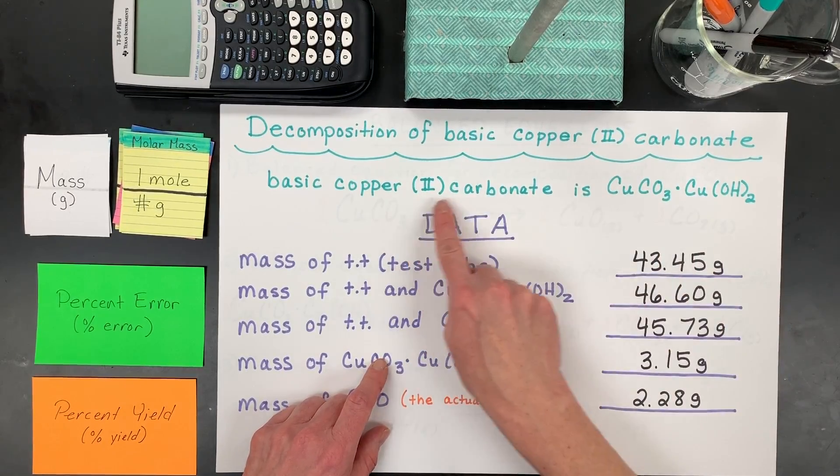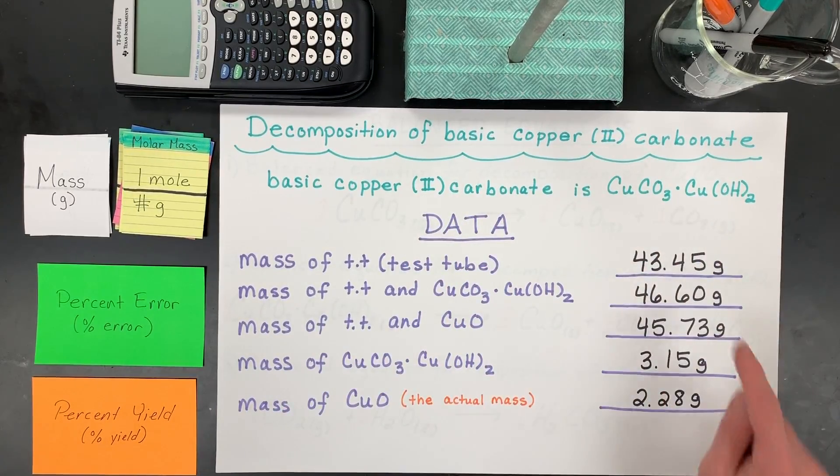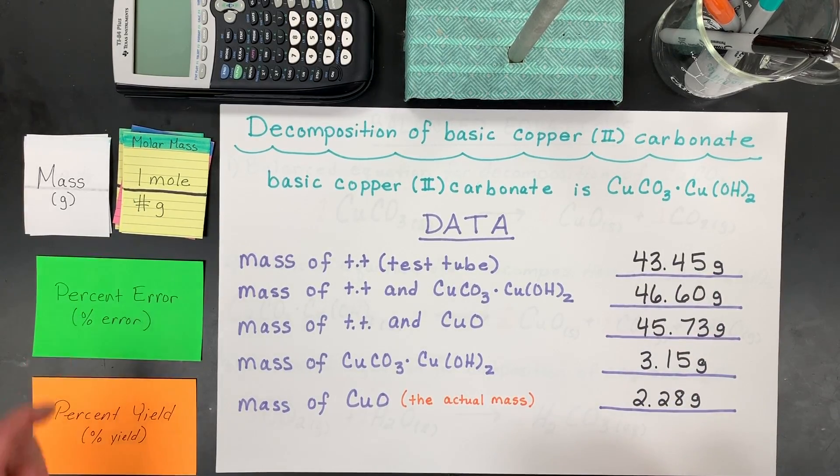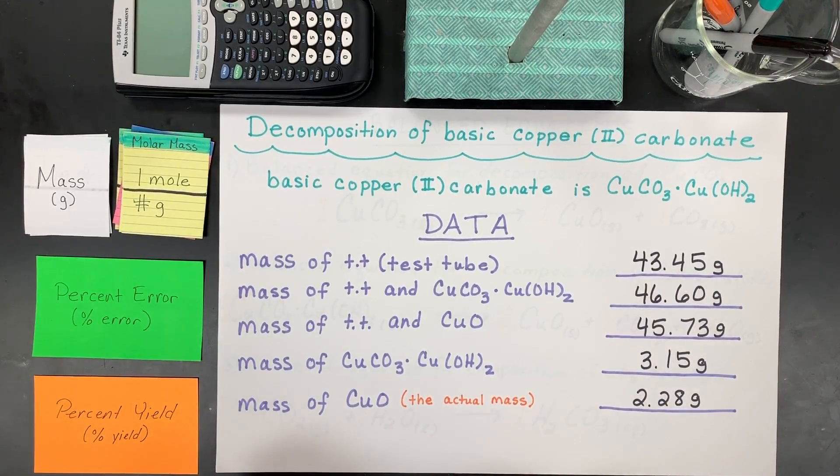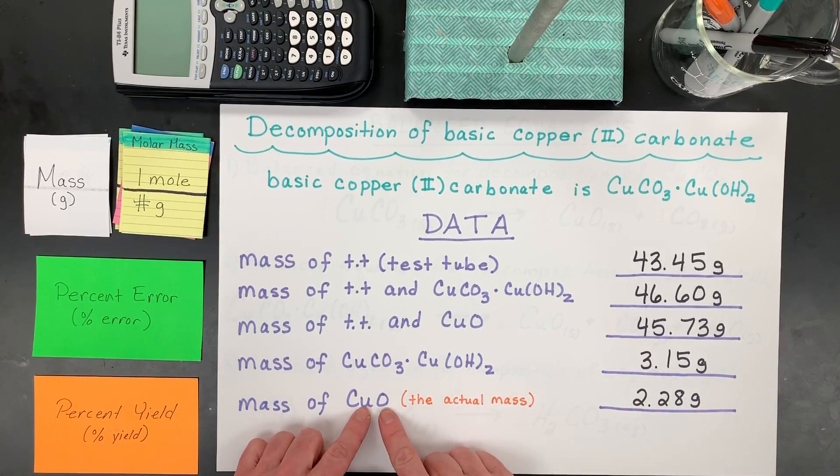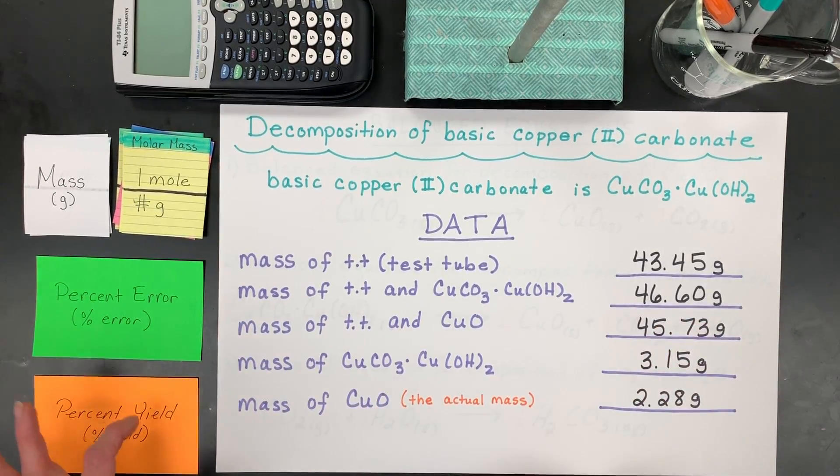Sometimes this is even called copper 2 carbonate hydroxide. You're going to need this data, if you didn't watch that video, to do the percent yield and percent error calculations and the stoichiometry that proves the theoretical mass. Then we're going to use this actual mass of the copper oxide product to calculate how well the lab went and the yield and the error. All right, so off we go.